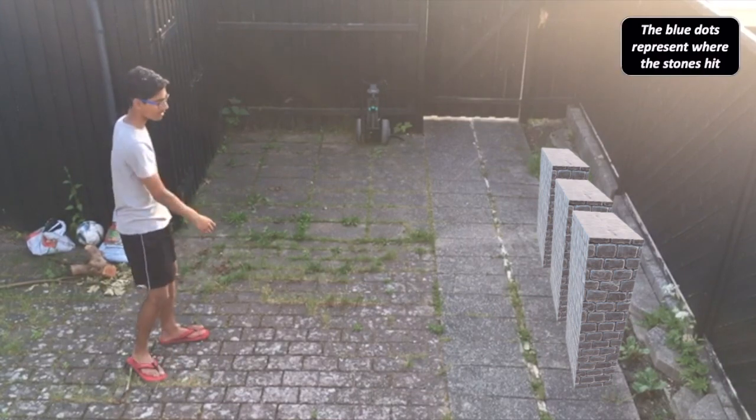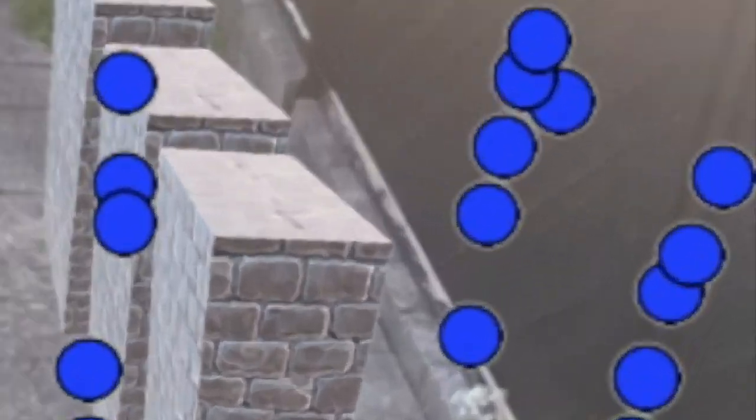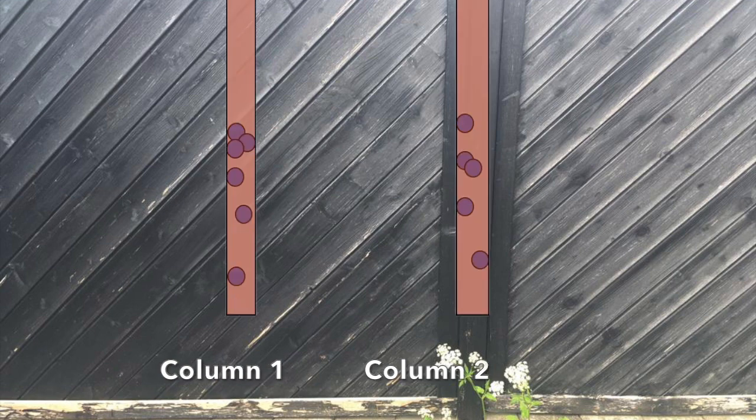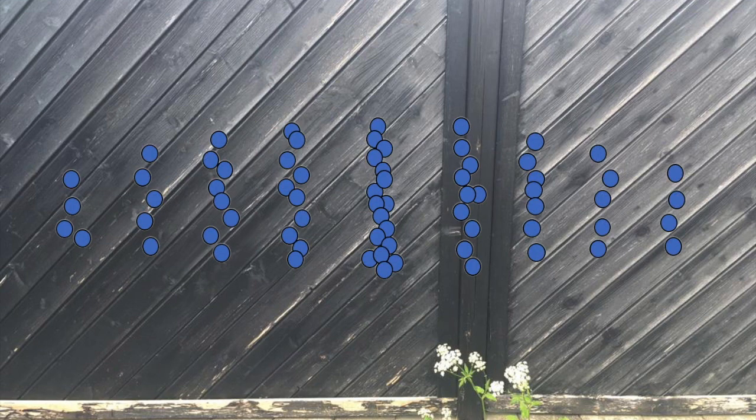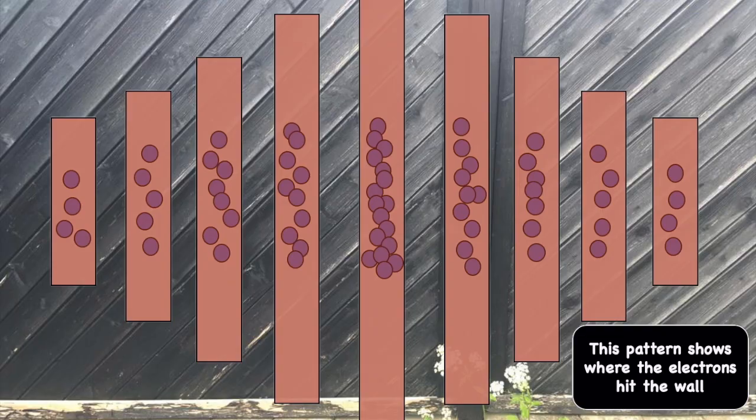If we throw stones randomly onto the wall with two slits, we would expect to see two columns created with the stones at the back wall. However, if we throw electrons, we would get a whole new pattern for some reason. So why does this happen?